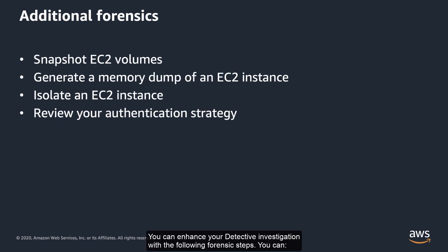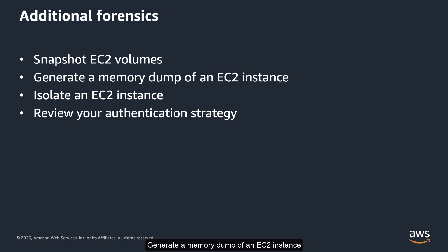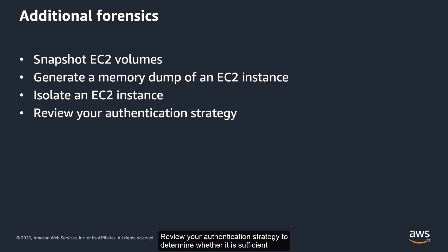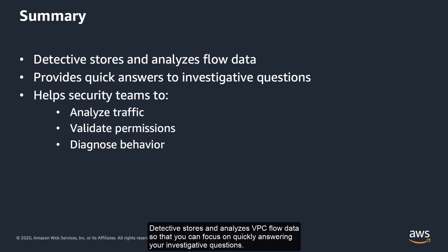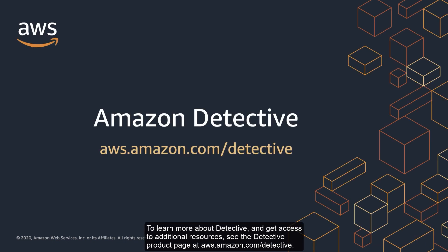You can enhance your Detective investigation with the following forensic steps: snapshot EC2 volumes, generate a memory dump of an EC2 instance, isolate an EC2 instance, and review your authentication strategy to determine whether it is sufficient. Detective stores and analyzes VPC flow data so that you can focus on quickly answering your investigative questions. This helps security and operations teams to analyze EC2 traffic, validate security group permissions, and diagnose EC2 instance behavior. To learn more about Detective and get access to additional resources, see the Detective product page at aws.amazon.com/detective.